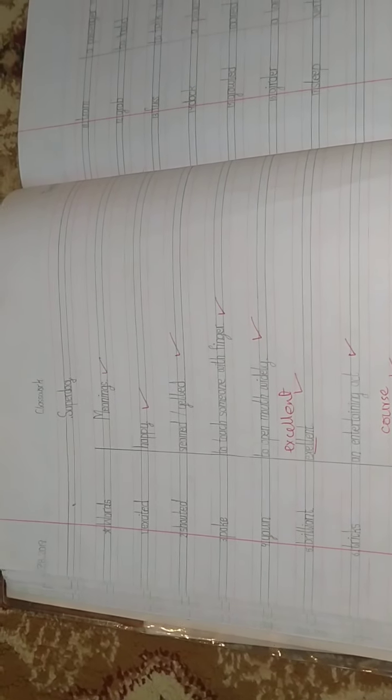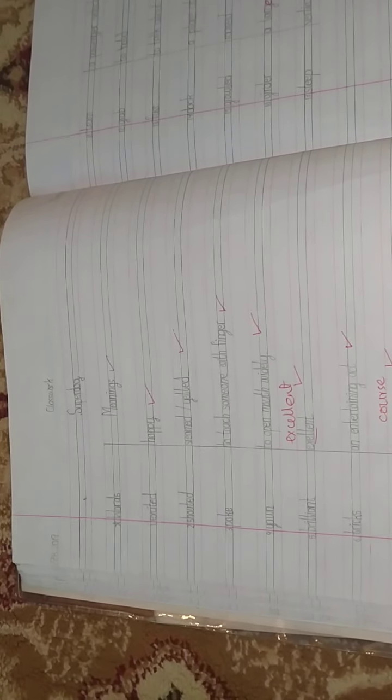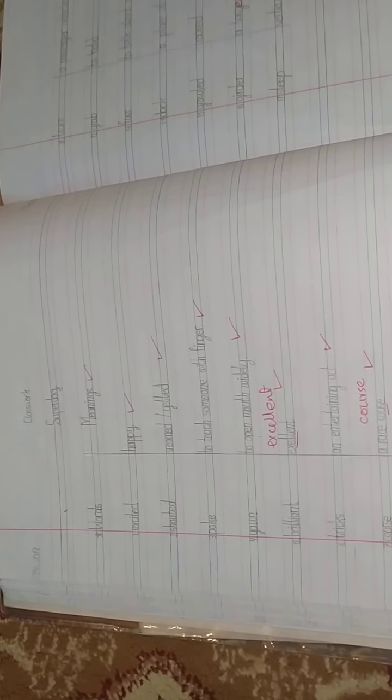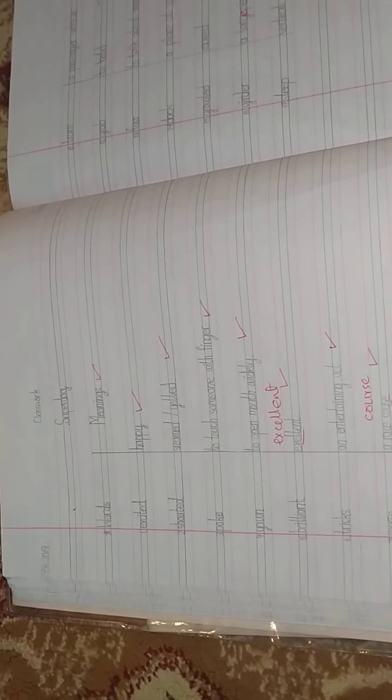Assalamu alaikum students, I'm your teacher Simra and last time we had completed our reading of Super Dog. But now today we are going to do its words and meanings. First of all, write date and day, so the date is 20th June 2020 and the day is Saturday.